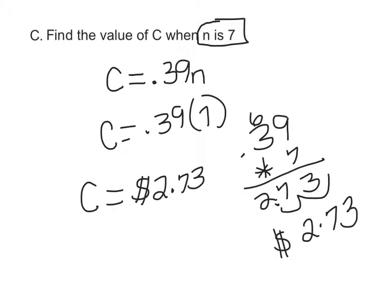After I multiply $0.39 times 7, I find out that the cost for 7 CD cases is $2.73, and that's the answer to part C.